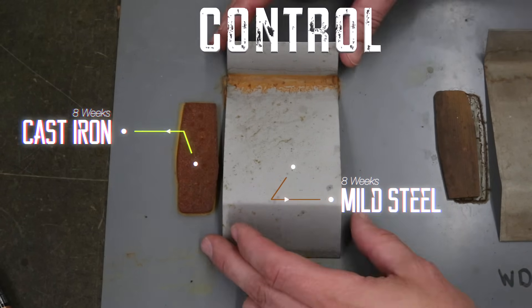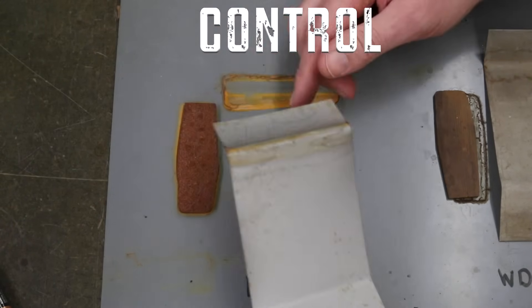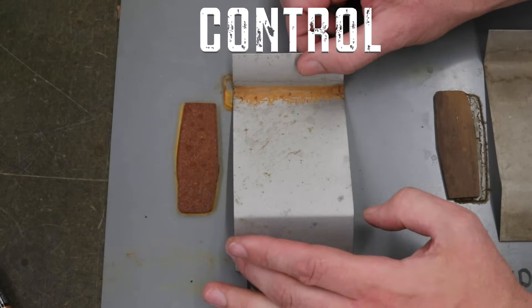This coupon was left untreated as the control sample. Cast iron rusted completely. The plate steel has left some rust behind on the bottom. And overall, it's kind of what I expect.